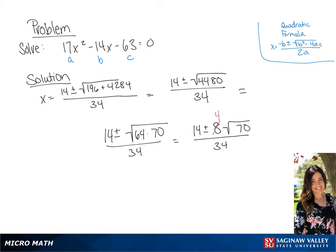We can further reduce this. And we get a final answer of 7 plus or minus 4 times the square root of 70 all over 17.